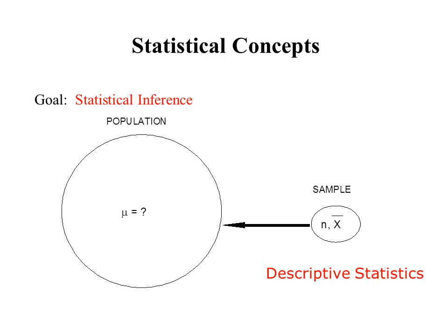I'd like to start off with a review of an idea we've talked about before — the relationship between statistical inference and descriptive statistics. In statistics, we want to know something about a large population, but to know that value exactly, we'd have to get information from every single member of the population, which is virtually impossible. So instead, we get information from a sample, calculate descriptive statistics, and use those to make inferences about the large population. Probability allows us to go from one to the other. We've talked about descriptive statistics and probability — now we're ready to talk about statistical inference.